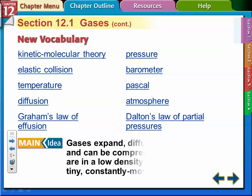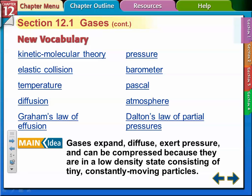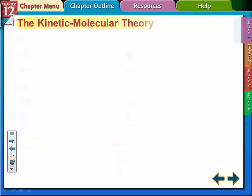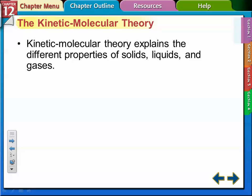The main idea here is that gases expand, diffuse, exert pressure, and can be compressed because they're in a low-density state consisting of tiny, constantly moving particles. This is the basis of the atomic and molecular level—we're going to talk about the behavior of gases and how the kinetic-molecular theory explains it.